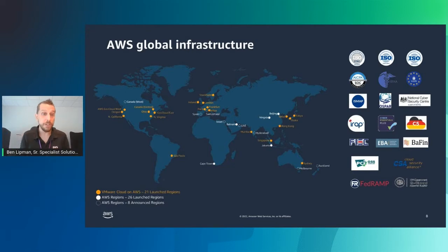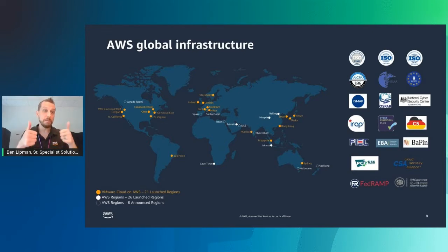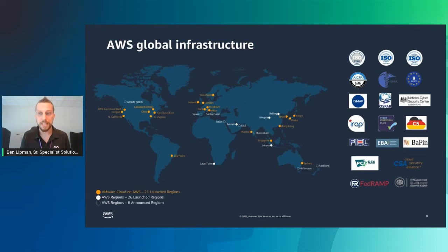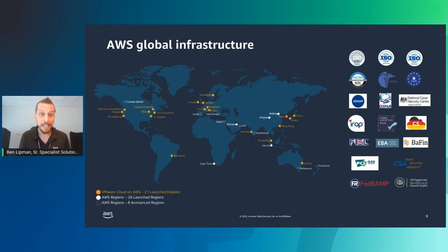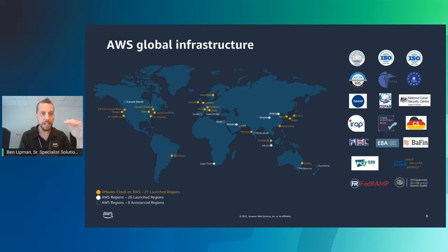Consider how powerful the AWS global infrastructure is: you can wake up Monday and tell your boss you need a call center in Mumbai, create a software-defined data center in VMware Cloud on AWS, and be up in two to three hours. Changed your mind? Power it back down and stop paying. Beyond the global infrastructure with 21 current regions, there are important compliance attestations — PCI, FedRAMP — that you can leverage to add business value. Instead of having auditors analyze all your infrastructure, take advantage of what AWS and VMware are doing for you and build upon that.